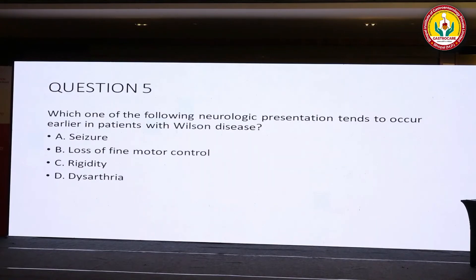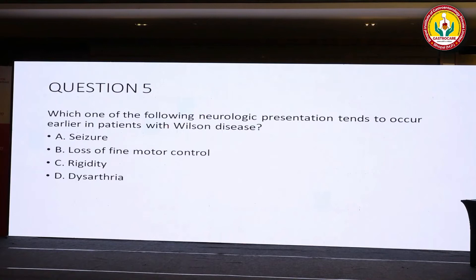Question number 5: which of the following neurological presentations tends to occur earlier in patients with Wilson's disease? Option A: seizure. Option B: loss of eye motor control. Option C: rigidity. Option D: dysarthria.